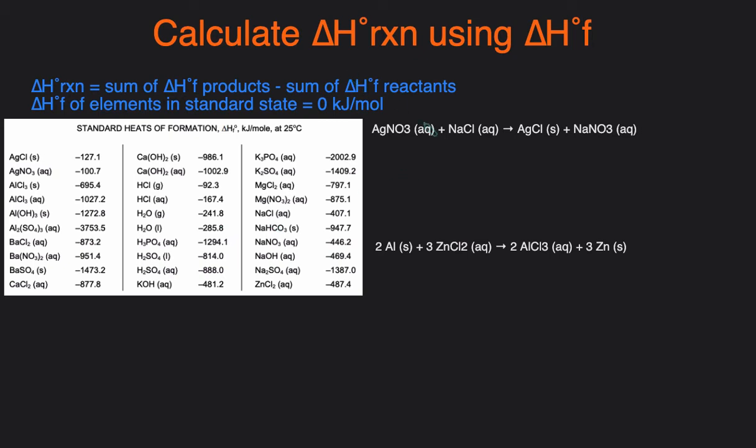So we'll have to calculate the delta H of both of these reactions by using the heat of formation. So we just essentially do products minus reactants. So let's just write it out. Delta H of formation equals the products minus the reactants, and then we'll substitute the values in.